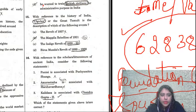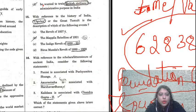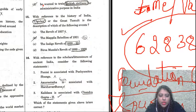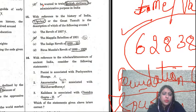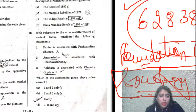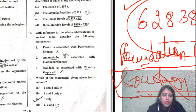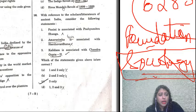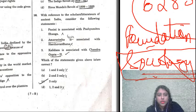Moving to question fifteen: with reference to the history of India, 'Ulgulan' or the Great Tumult is the description of which event — the Revolt of 1857, the Mappala Rebellion of 1921, the Indigo Revolt of 1859-60, or Birsa Munda's Revolt of 1899-1900? The correct answer is D — Birsa Munda's Revolt of 1899-1900. The question was asked in the context of the Munda Rebellion, which was also discussed in current affairs.